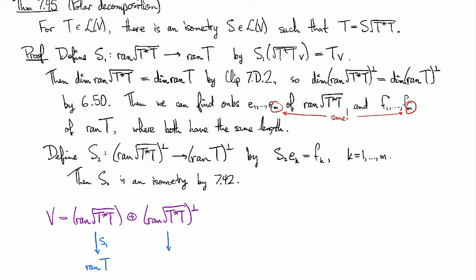And so now we've got S1 mapping this to range of T. And we've got S2 mapping this to range T perp. And so now what we need to do, basically,